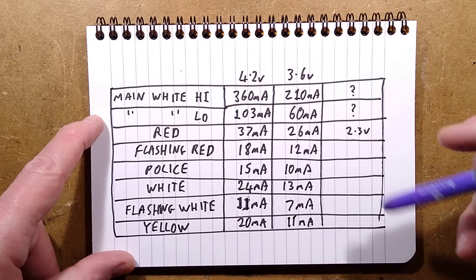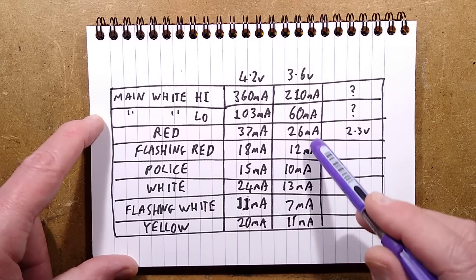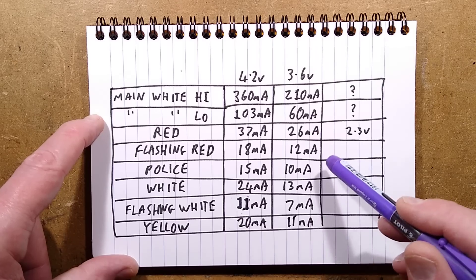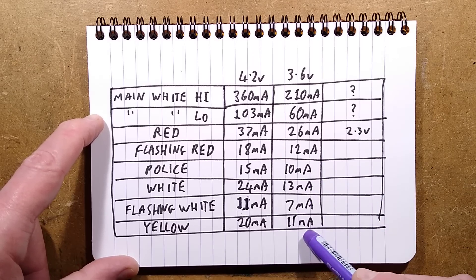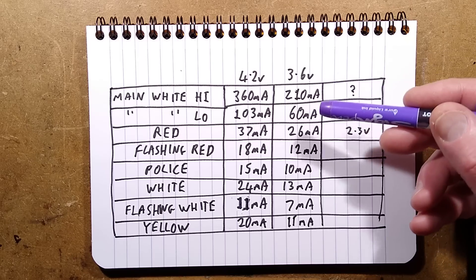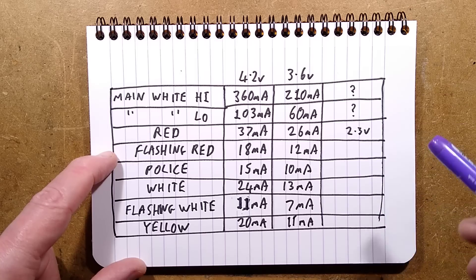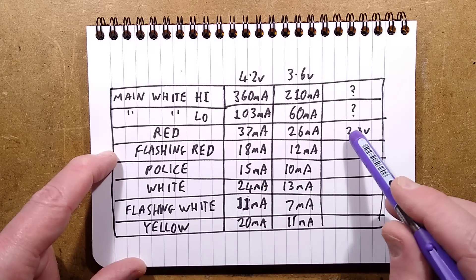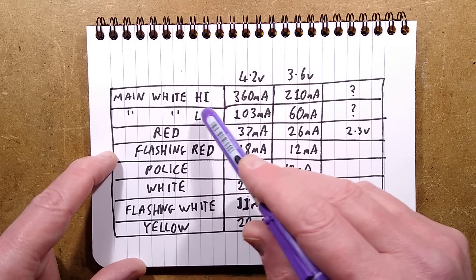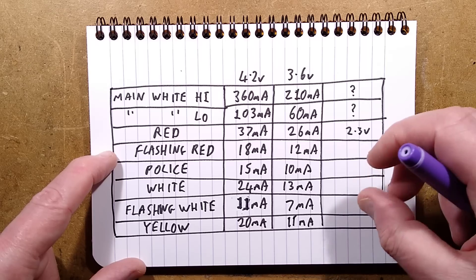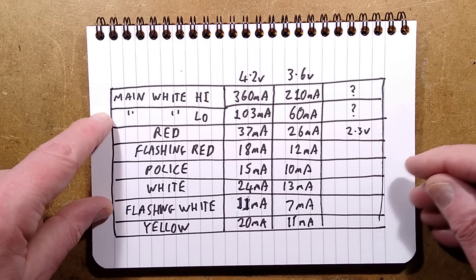Down at 3.6 volt, which is roughly half the battery status, it's 210 milliamps at full white, 60 milliamps low white. Red, 26 milliamps. Flashing red, 12 milliamps. Police, 10 milliamps. White, 13 milliamps. Flashing white, 7 milliamps. And yellow is 11 milliamps. So very quickly from a full cell, it drops down to below about 20 milliamps for the white LED. I didn't bother going much lower. I just measured at what point it kind of cut out. With the red on, it cut about 2.3 volts. I thought the red was going to be the lowest forward voltage. Now, in reality, it's going to be the main white one with that diode drop effect with a junction drop, the base drop of 0.6 volts. So it does potentially drain the battery down below sensible levels.